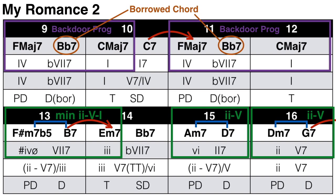A secondary dominant then tonicizes the F major 7 chord and we go straight into another backdoor progression. So all the chords in bars 9 through 12 are in the key of C major, even though some are non-diatonic. In bars 13 and 14 we have a 2-5-1 in E minor, so we've modulated there. Then a Bb7 moves to A minor 7 — the Bb7 is a tritone substitution of E7, the V chord of A minor 7. In bar 15 we have a 2-5 in G major, the relative major of E minor, and we finish with a 2-5 back in our original key of C.